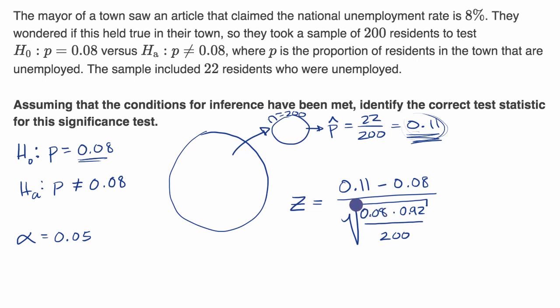And we could get a calculator out to figure this out, but this will give us some value, which says, how many standard deviations away from 0.08 is 0.11? And then we could use a z-table to figure out what's the probability of getting that far or further from the true proportion, and then that will give us our p-value, which we can compare to the significance level.